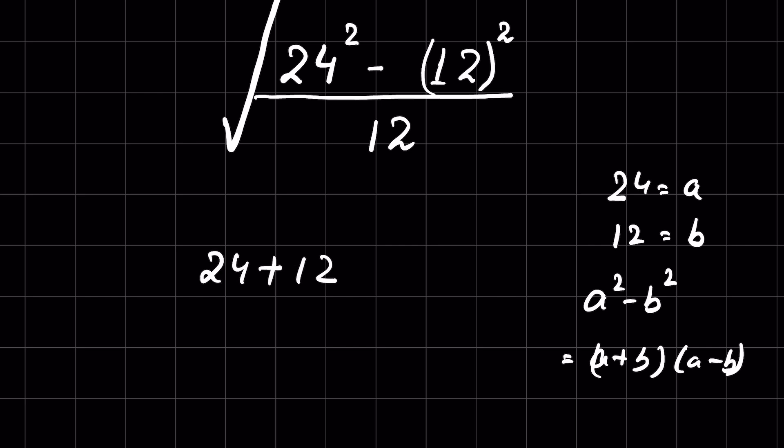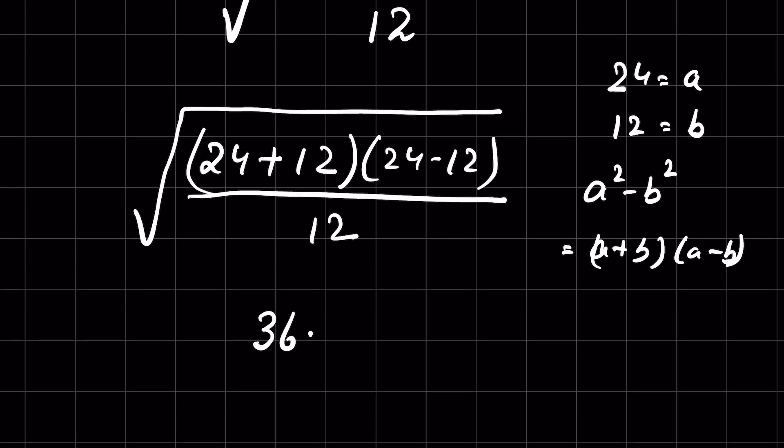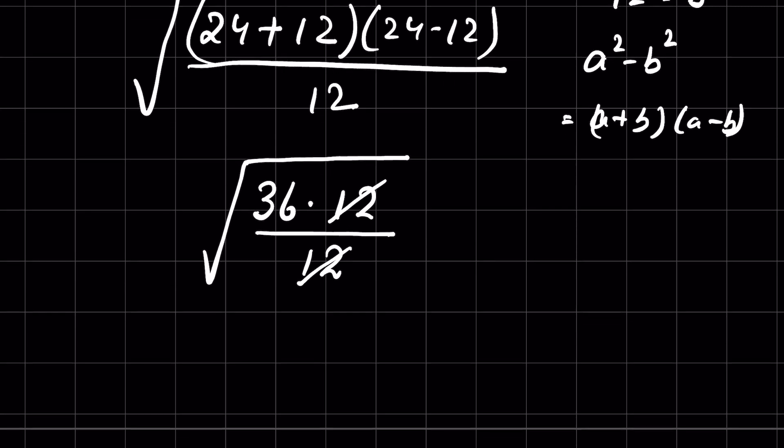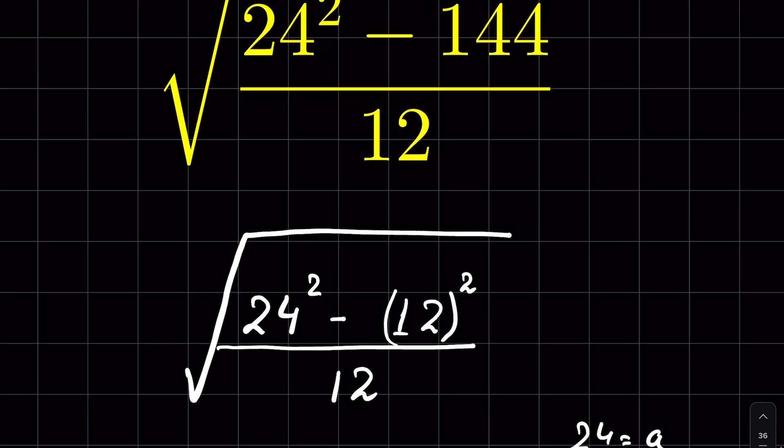So we can write it as 24 plus 12 times 24 minus 12 upon 12, under square root. So this is 36 times 12 upon 12 under square root. Now we can remove this 12 and this 12. So this is 36 under square root, and square root of 36 is 6. So this is the answer. This is one way of solving it.